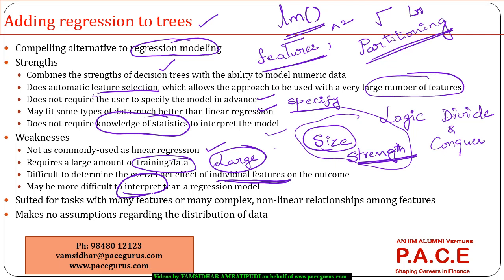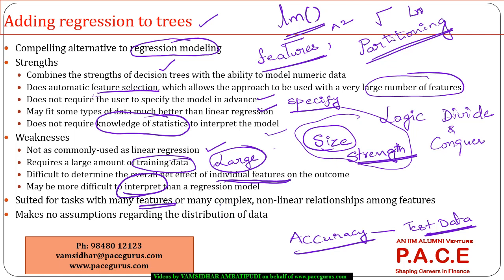We have to make a decision based on the level of accuracy — what accuracy the model gives when executed on test data is the most important aspect. Regression trees are generally suited for tasks where features are too many to specify a complete model, and where relationships are complex and non-linear rather than simple linear ones. In those cases, it makes sense to evaluate regression trees.